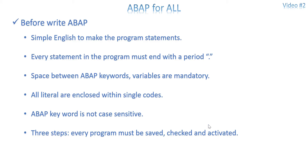There are three steps for every program. Once your program is complete you have to save it, check it, and activate it. This is not only for programs — any object you create inside SAP needs to be saved, checked, and activated. Save just saves your changes. Check is to check for syntax errors in your program or screen or menus. Activate I will explain a little later with an example.